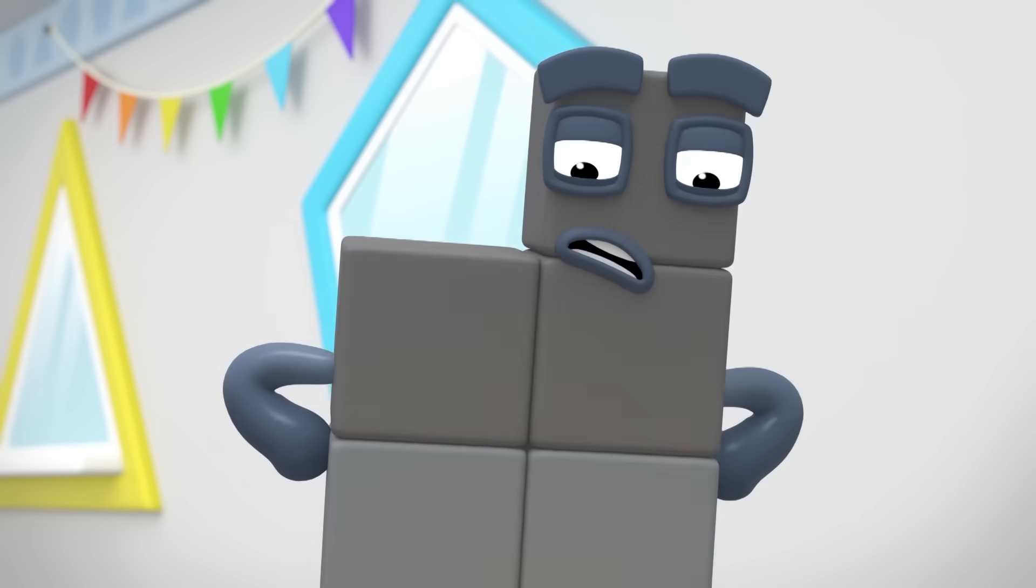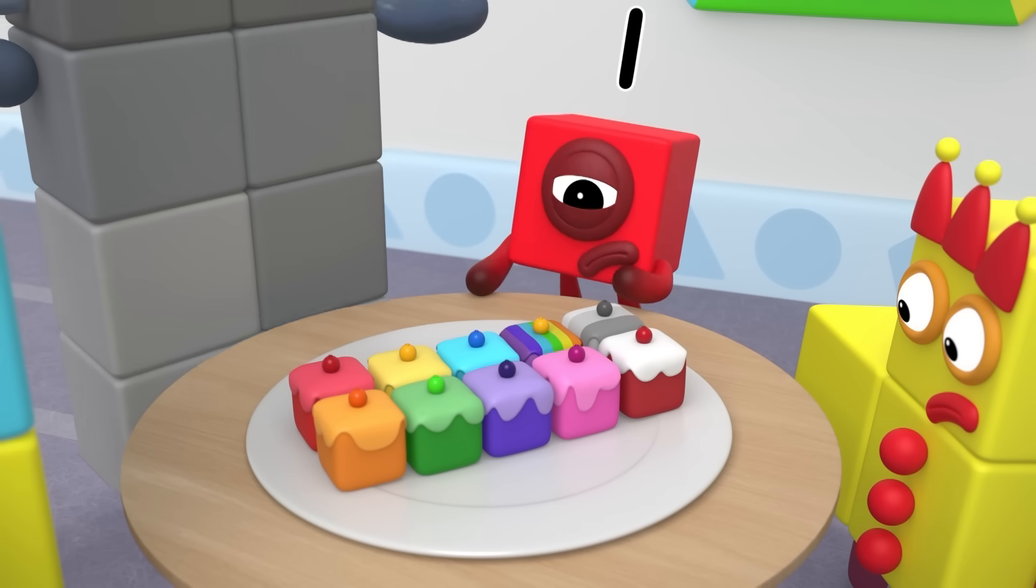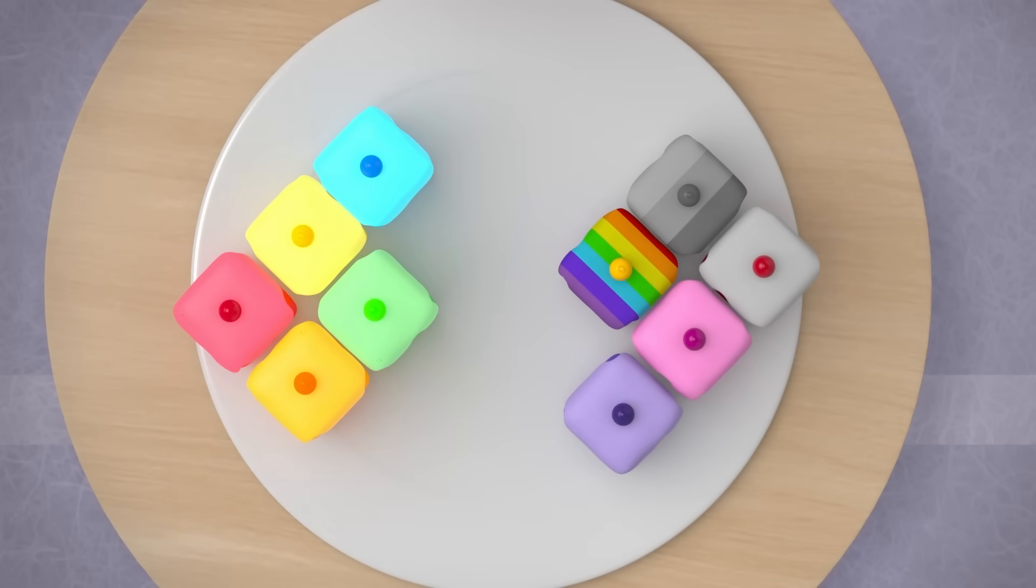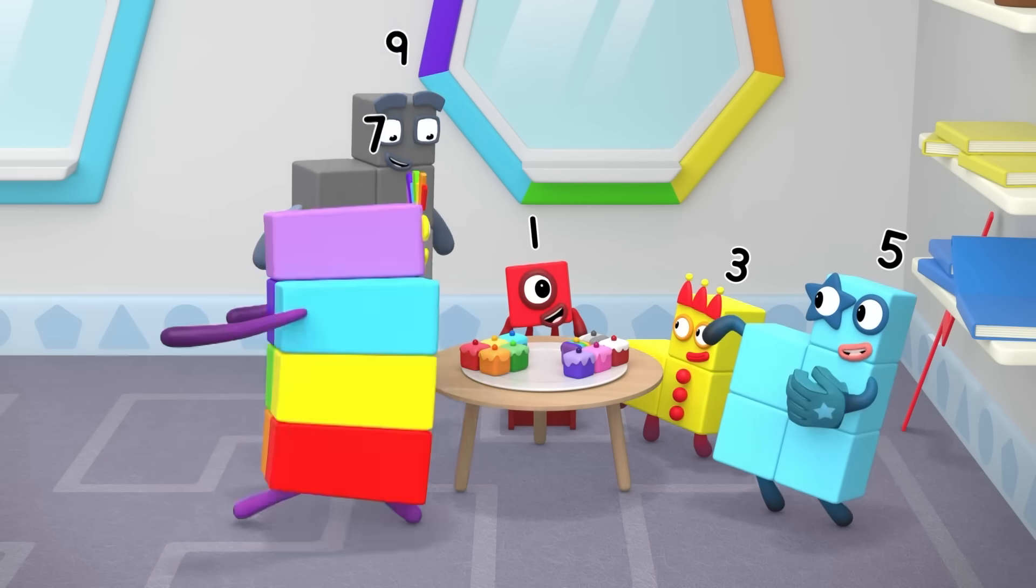Ten cakes? That's an even number. It's two lots of five. One each for now and one each for later. You've got it, Juan. Well done.